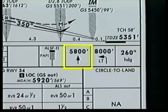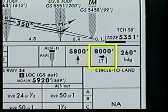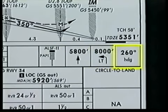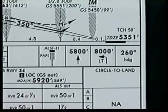Located below the profile view graphic is a series of symbols which represent initial pilot actions in the event of a missed approach. They provide symbolic information about the initial up and out maneuvers only. In this example, the icons are read as climb to 5,800 feet, then climbing left turn to 8,000 feet, via a 260 degree heading. Always refer to the missed approach instructions in the heading section and the plan view graphic for complete information about the missed approach procedure.